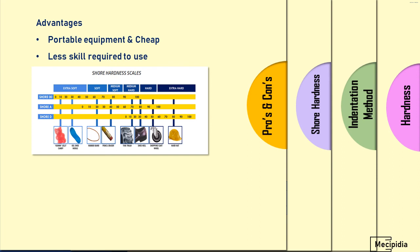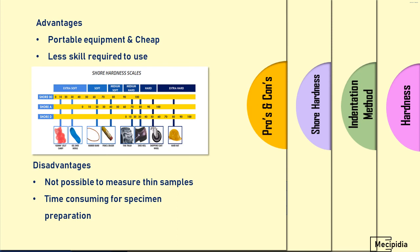Further, it keeps increasing to Shore D scale for extra hard materials like safety hats, which lie at Shore 80D. Coming to disadvantages: it is not possible to measure thin samples. Time consuming for specimen preparation, because this is a manual measuring method. We need to apply force from our hand, so it's better to make a specimen for accurate results. Time consumption for making test specimens is one drawback.